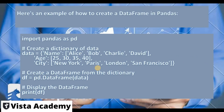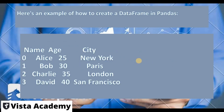Here is an example of a DataFrame in pandas. First we create a dictionary named 'data' with keys and values: name, with values like Alice, Bob, Charlie, David; then age; and then city. From this dictionary we create a DataFrame — df is the name, pd.DataFrame(data) is the command — and then print df. It will display name, age, city columns with indexing starting from zero.